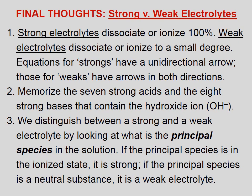Final thoughts on strong versus weak electrolytes: One — strong electrolytes dissociate or ionize 100%; weak electrolytes dissociate or ionize to a small degree. Equations for strongs have a unidirectional arrow; those for weaks have arrows in both directions. Two — memorize the seven strong acids and the eight strong bases that contain the hydroxide ion, OH⁻. Three — distinguish strong from weak by identifying the principal species in solution: if it's in the ionized state, it's strong; if it's a neutral substance, it's a weak electrolyte.